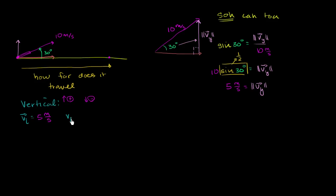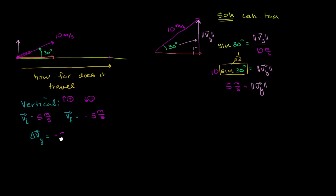We're just talking about the vertical component right now — we haven't thought about the horizontal yet. We're just figuring out how long this thing stays in the air. Its final vertical velocity is going to be negative 5 meters per second — same magnitude, just in the opposite direction. So our change in velocity in the vertical direction is: final velocity (−5 m/s) minus initial velocity (5 m/s), which equals negative 10 meters per second.